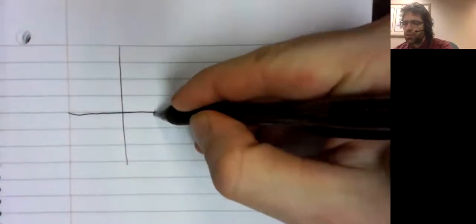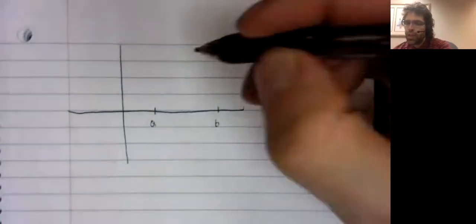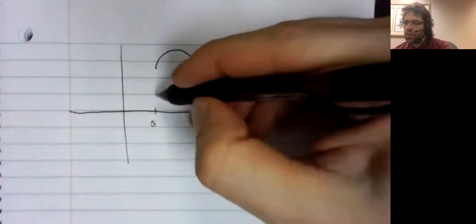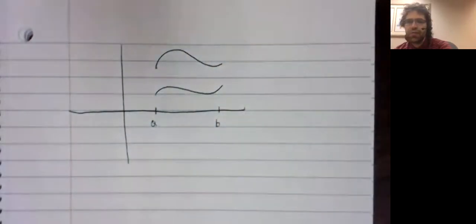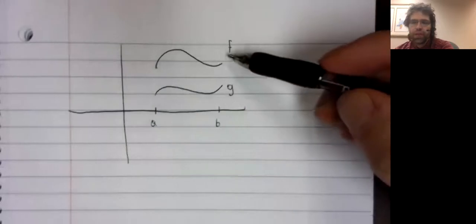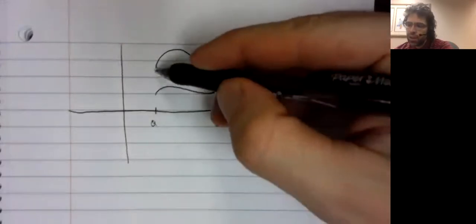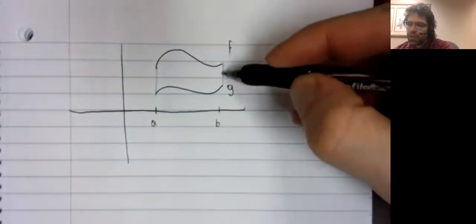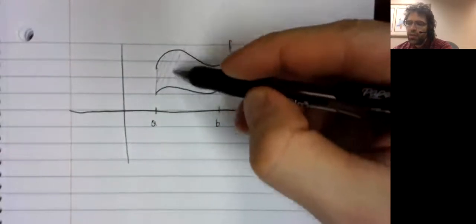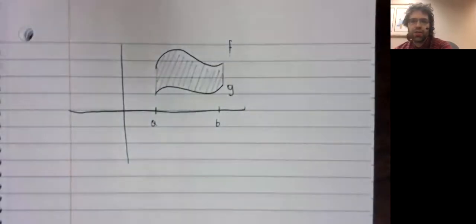For now, though, let's just focus on our goal. We've got some interval that we're looking at. And on this interval, we have two functions, F and G. And one of the functions is always greater than the other. And we are looking for the area between these curves.